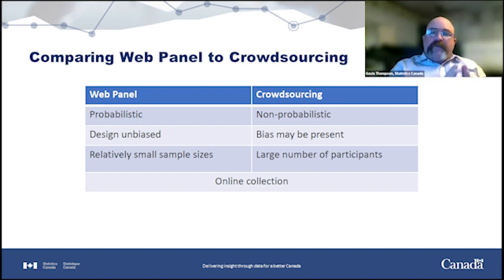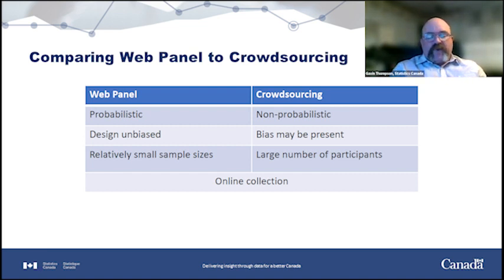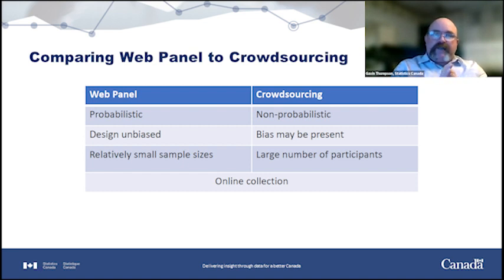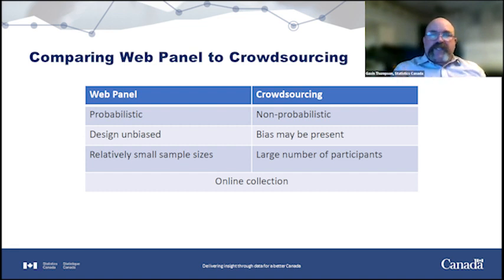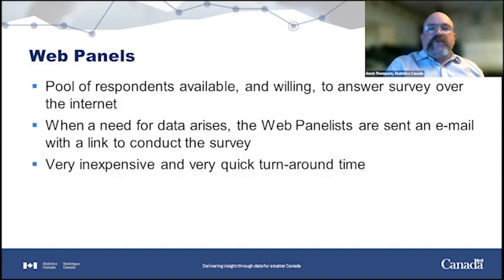Web panels can be confused with crowdsourcing, but they're different. A web panel is where you sign up to do surveys on the internet — companies send you surveys every week or month and you answer them. Web panels have existed for a long time. They can be probabilistic: you can design them so that they're unbiased because you know who signed up. They have smaller sample sizes by comparison. With crowdsourcing, you have no idea who's answering, it's difficult to prevent people from answering twice, and bias may be present.